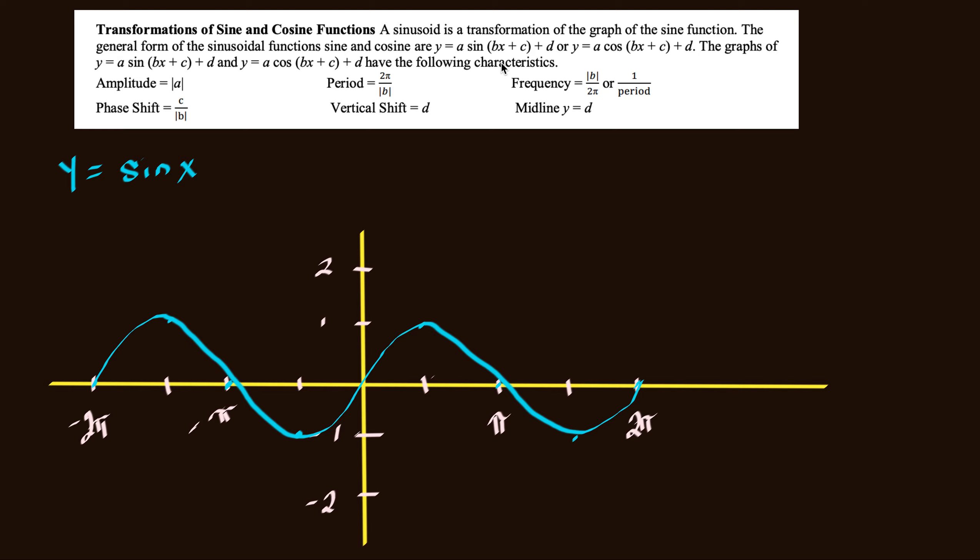You can see up here where it says we've got an A for amplitude and B is going to help us find our period and C is going to help us find our phase shift and D being our vertical shift and where our midline is.